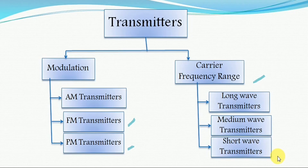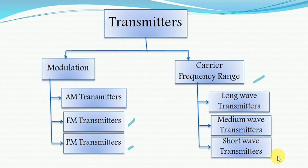In addition to long, medium, and short wave transmitters, there are other frequency range classifications. The very high frequency transmitter operates at 30 to 300 megahertz and is mainly used in FM radio broadcasting, mobile radio systems, TV broadcasting, and aeronautical and marine communications. The ultra high frequency transmitter operates at 300 to 3000 megahertz, and the super high frequency transmitter operates at 3 to 30 gigahertz, mainly used in radar and satellite communications.